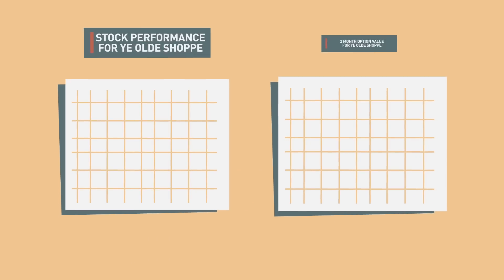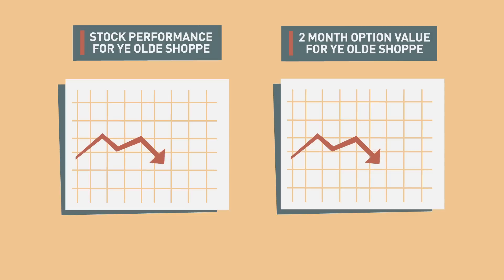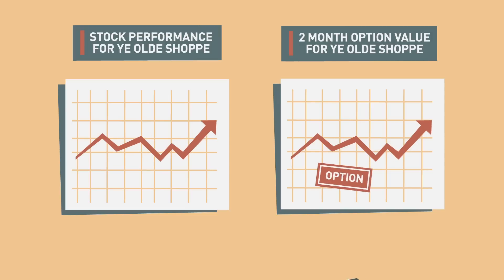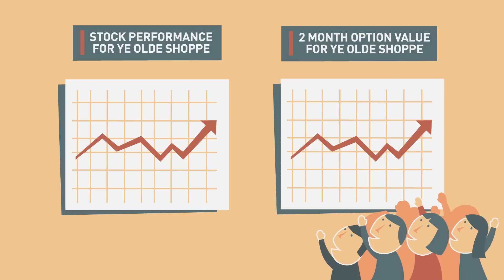Or, rather than exercise your option, you could sell it. Since an option's value is derived from the underlying asset — the stock in this case — the value of the option has risen along with the value of the stock. The option, therefore, can be sold in the market for a higher premium since the value of the option has risen with the value of the stock.